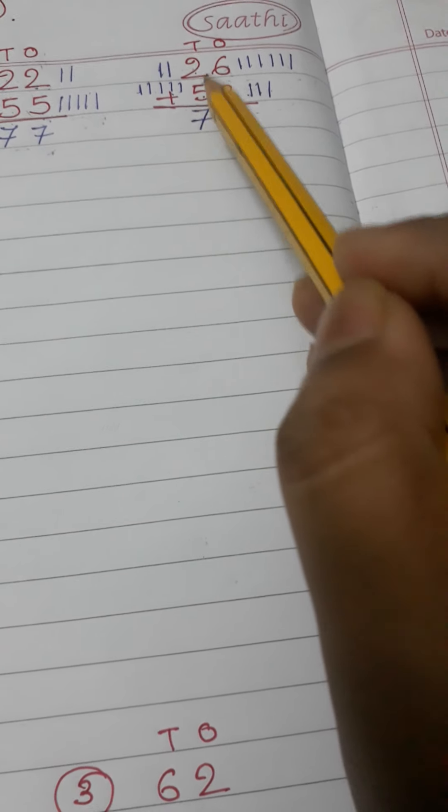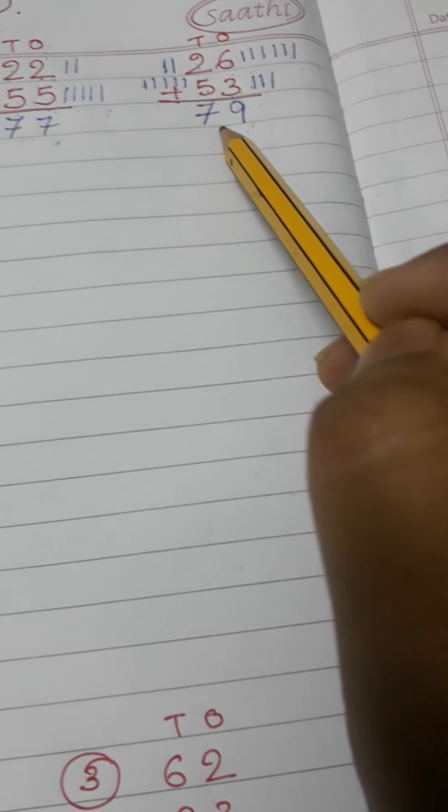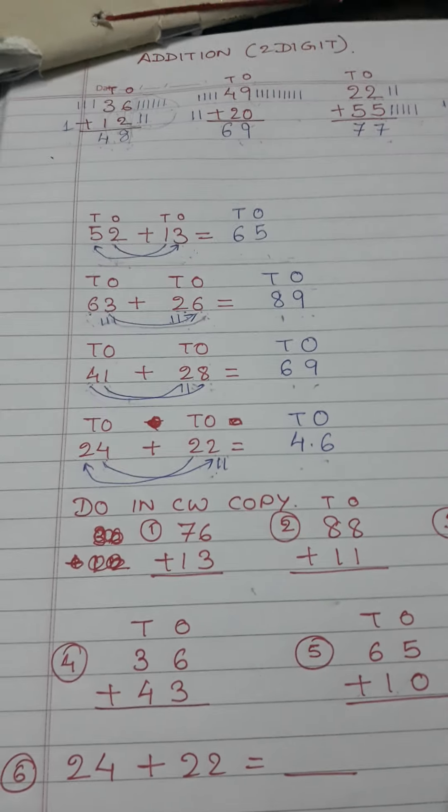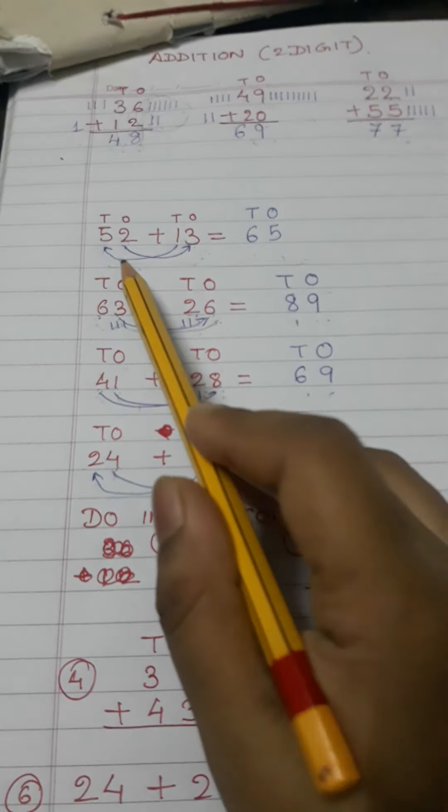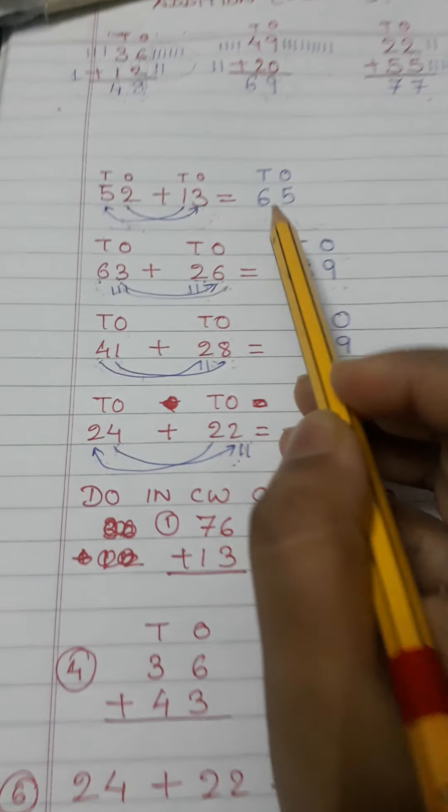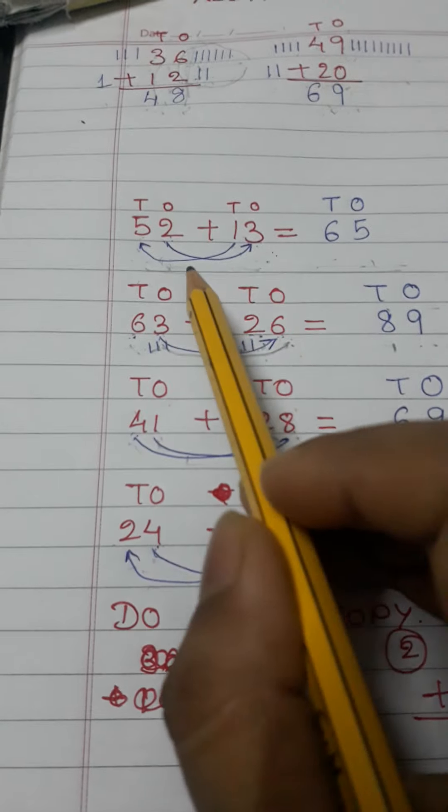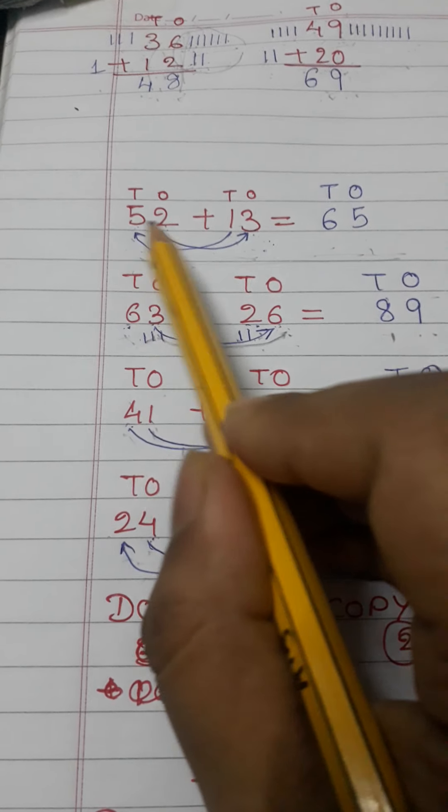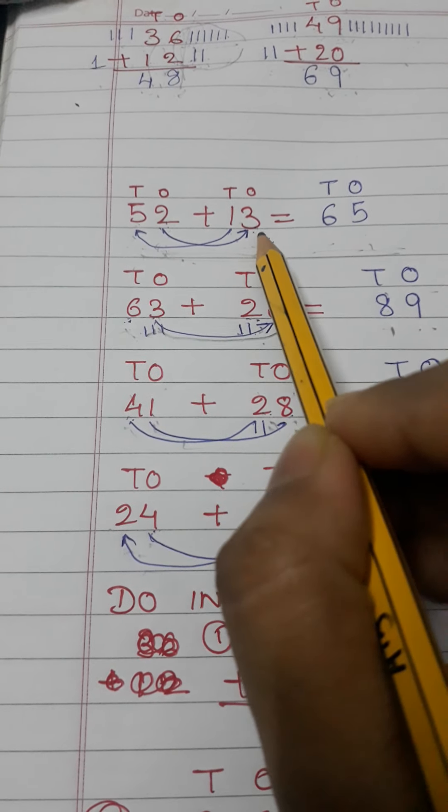Two plus five makes seven. Now the same addition done in horizontal way. This is vertical way, this is horizontal way. In this process what I will do is I have two numbers: fifty-two plus thirteen.